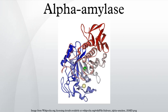Pancreatic alpha-amylase randomly cleaves the alpha-1,4 glycosidic linkages of amylose to yield dextrin, maltose, or maltotriose. It adopts a double displacement mechanism with retention of anomeric configuration.